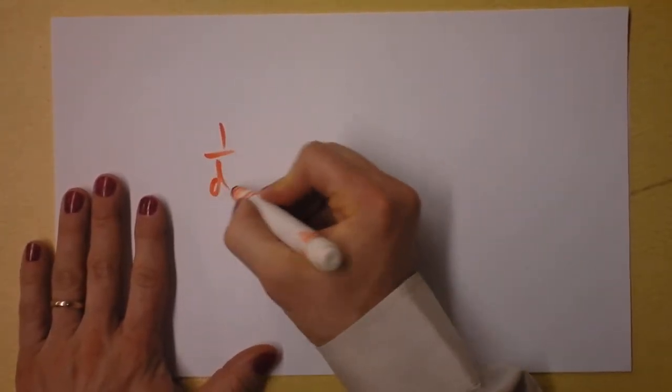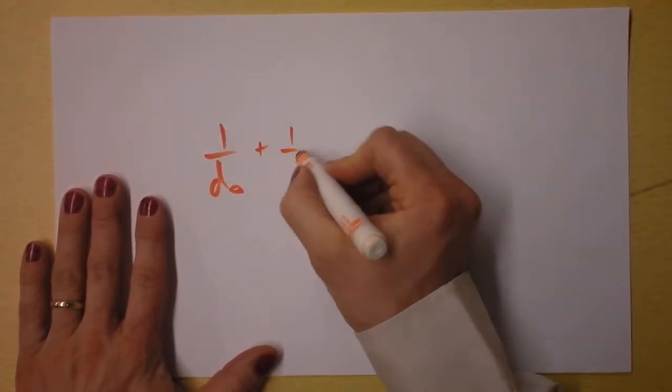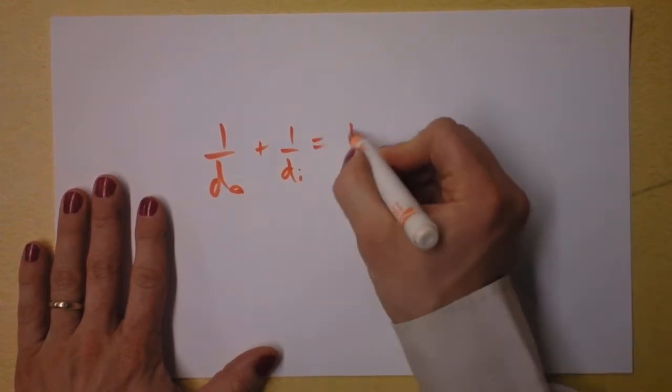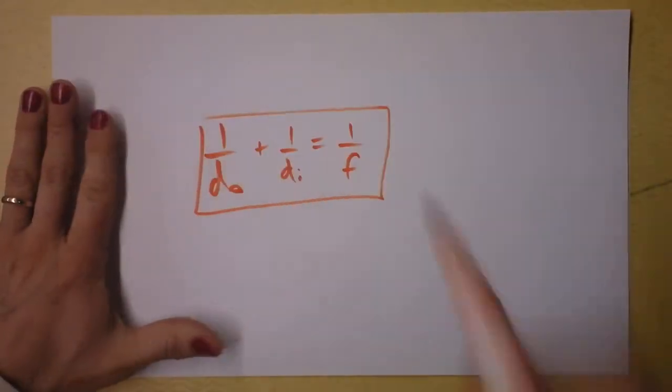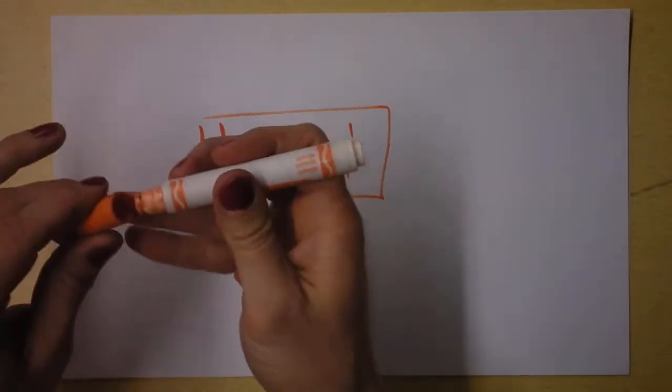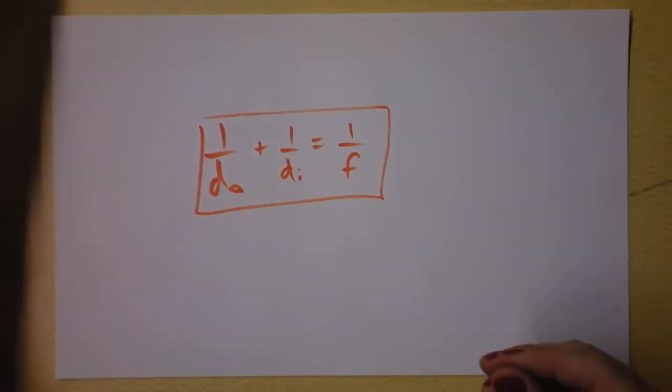So we've got this pretty awesome equation: 1 over d object plus 1 over d image equals 1 over d focal length. And this is the thin lens equation and it's also the mirror equation. I'd like to investigate some special cases of it.